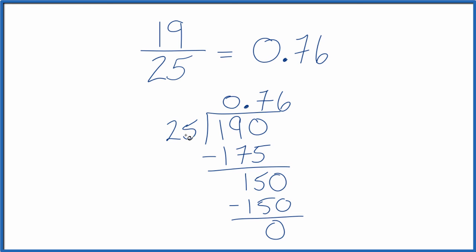So 19 divided by 25, 0.76. That's what we found before. So the fraction 19/25 equals the decimal 0.76.